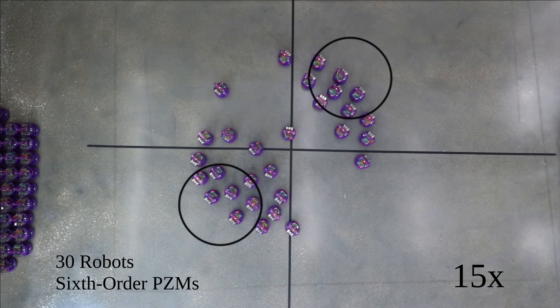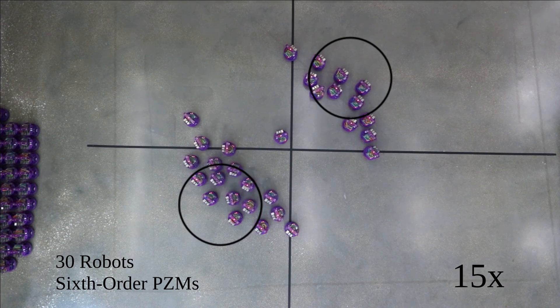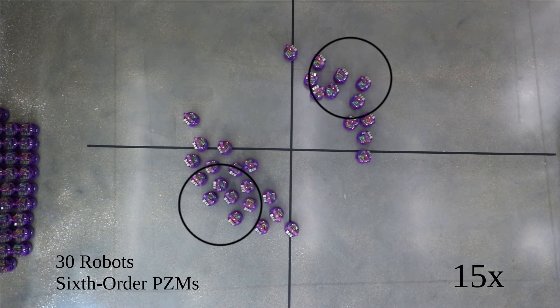Here, the robots form the two discs using 6th order Pseudo-Zernike moments. The final swarm formation has 19 robots near the leftmost disc and 11 near the rightmost.